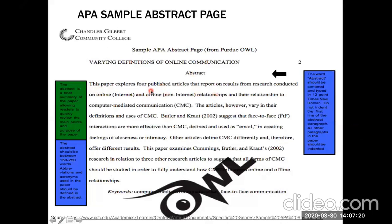The abstract is a brief summary of the paper, allowing you to quickly locate the main points and purpose. It should be between 150 and 250 words. Abbreviations and acronyms should not be used unless defined earlier in your paper. It should also include keywords and terminology to show the major points of interest.